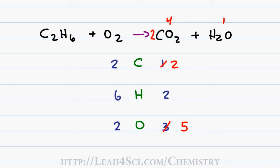The next thing not balanced is hydrogen. On the right I have only 2, but since I have 6 on the left I place a 3 in front of H2O, giving 3×2=6 hydrogens on the right. But I also update the oxygen: 3 from water and 4 from CO2 for a total of 7. Carbon is balanced, hydrogen is balanced, but once again we have an odd number of oxygens on one side and an even number on the other. Try to avoid fractions — instead, multiply the entire reaction by 2 except for oxygen.